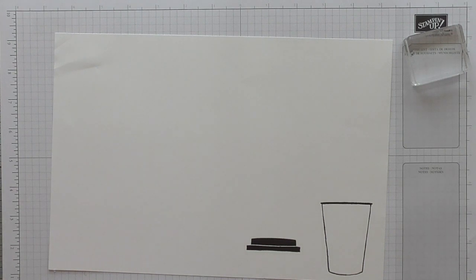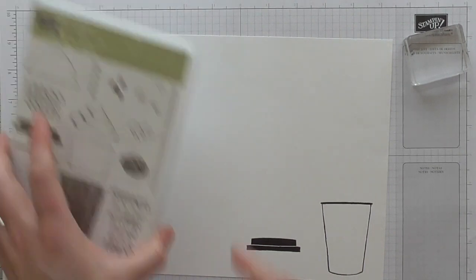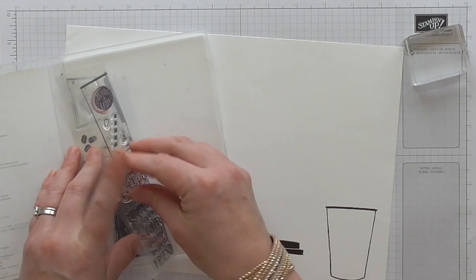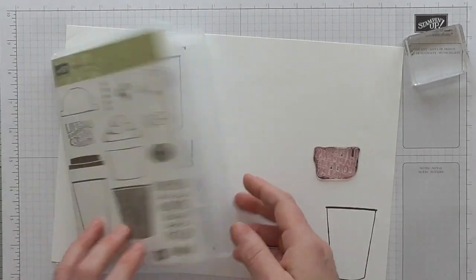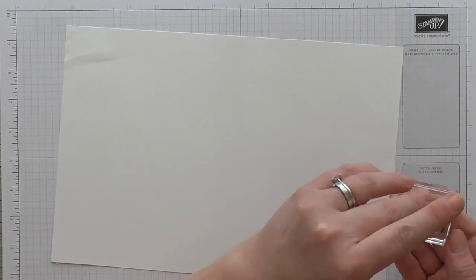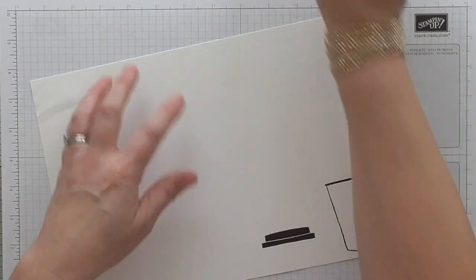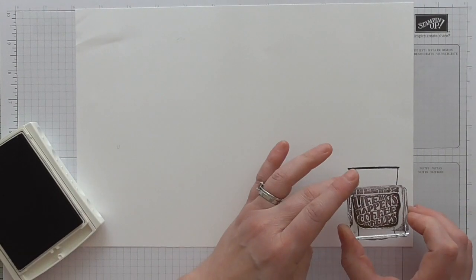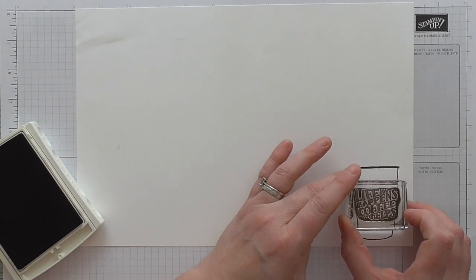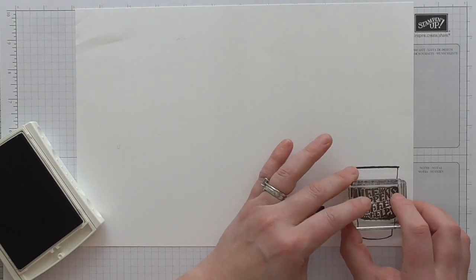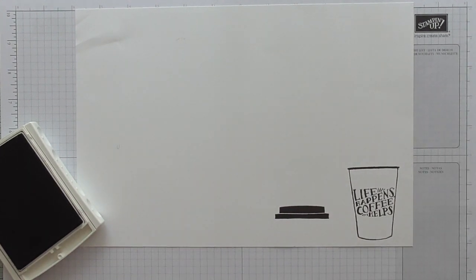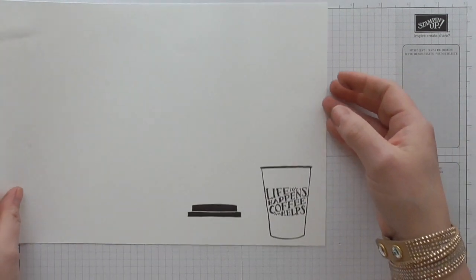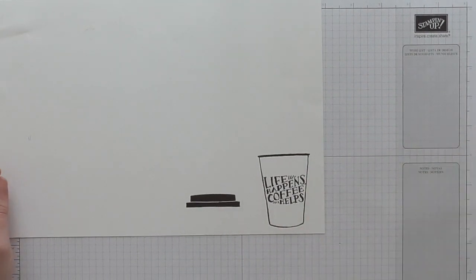I also need to stamp a sentiment. It's going to be this one: Life happens and coffee helps. I'm going to do early espresso. I think I'm going to just stamp that straight onto there and then I'll die cut it out. Let's see if I can manage to get that fairly straight. It saves me cutting out a load of different pieces and I'm happy with that. That looks cute. I'm just going to pause while I go and die cut these elements and I'll be back in a second.